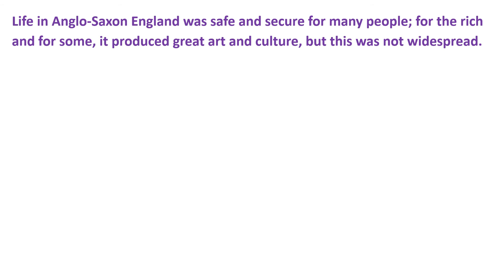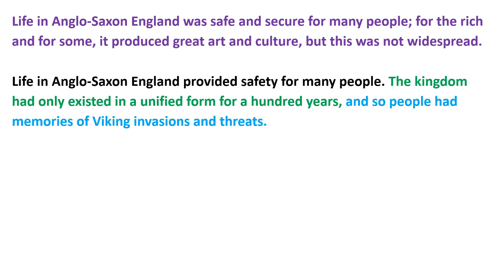Now let's try to break that down. I'm going to choose one of the introductions: Life in Anglo-Saxon England was safe and secure for many people. For the rich and for some, it produced great art and culture, but this was not widespread. I want to now follow my own structure and build up a paragraph. Life in Anglo-Saxon England provided safety for many people. The kingdom had only existed in a unified form for a hundred years, and so people had memories of Viking invasions and threats. It proves that life in England was safe and secure — it references some historical evidence and it gives you a reason.